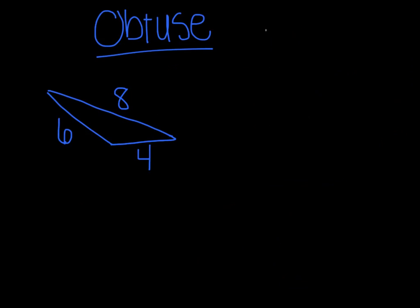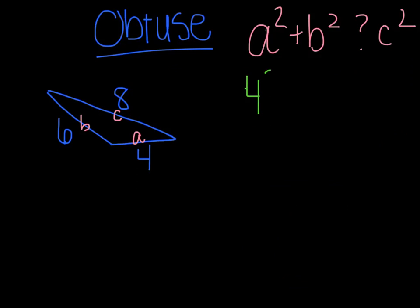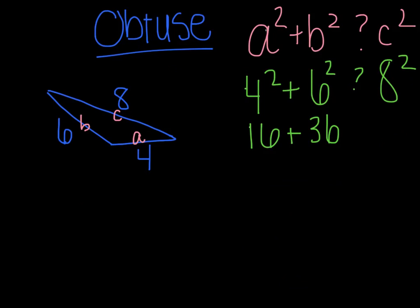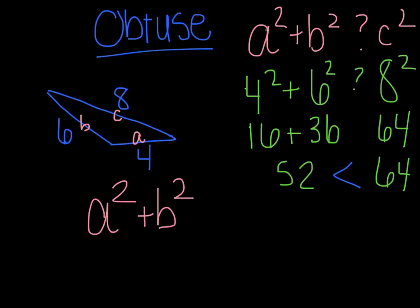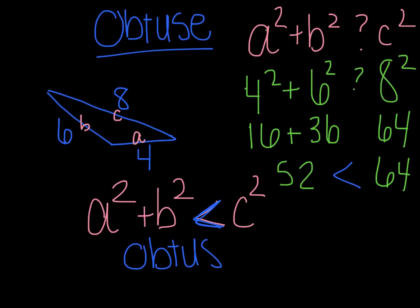So what happens in obtuse triangles? Again, we have A and B as my smaller sides, and my largest side will be C. Now I'm going to see what happens when I do A squared plus B squared and compare it to C squared. In this case, we use 4 and 6 compared to 8. So 4 squared plus 6 squared compared to 8 squared gives us 16 plus 36 compared to 64. I get 42, and that's less than 64. This happens in every obtuse triangle: A squared plus B squared is less than C squared, and the less than is key — this results in an obtuse triangle.